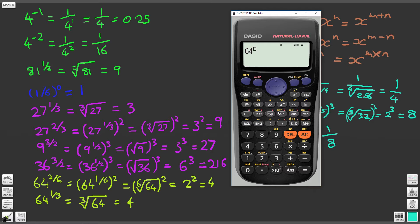64 to the power of 2 over 6, which gives us 4. So 64 to the 2 over 6 gives us 4. 64 to the power of 1 divided by 3, so this is the simplified form of that, and we should get 4 again. And we did. So 64 to the power of 2 sixths is the same as 64 to the power of 1 third. So that's great.